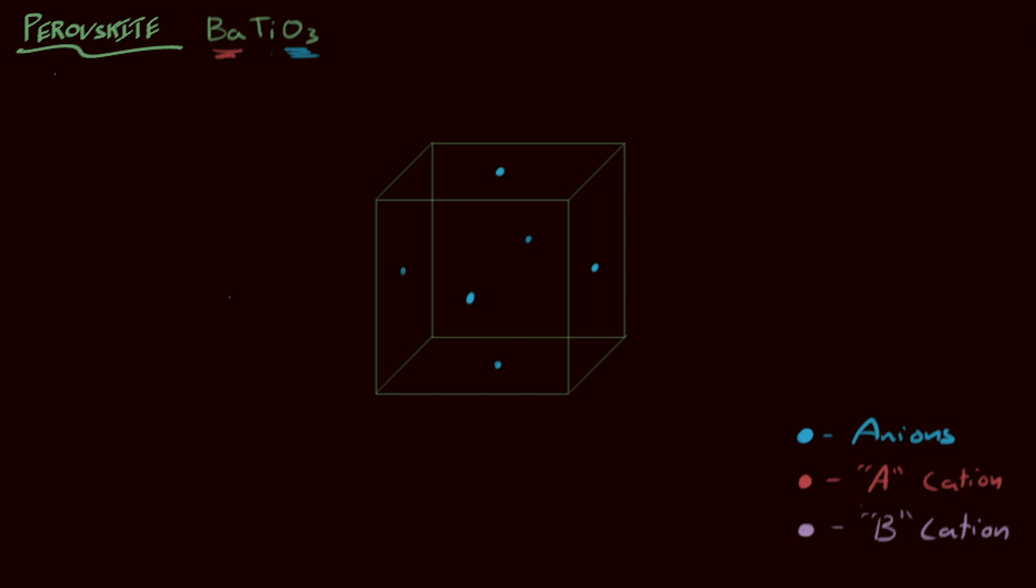And then, listen to some quick math here. We've got six faces on the cube, and each one, we're only concerned with the half of the anion that's inside, so that's three, and that works out. That hits our formula just right, so now we have to find a way to put one barium and one titanium into this unit cell. The titanium is going to be that purple color.